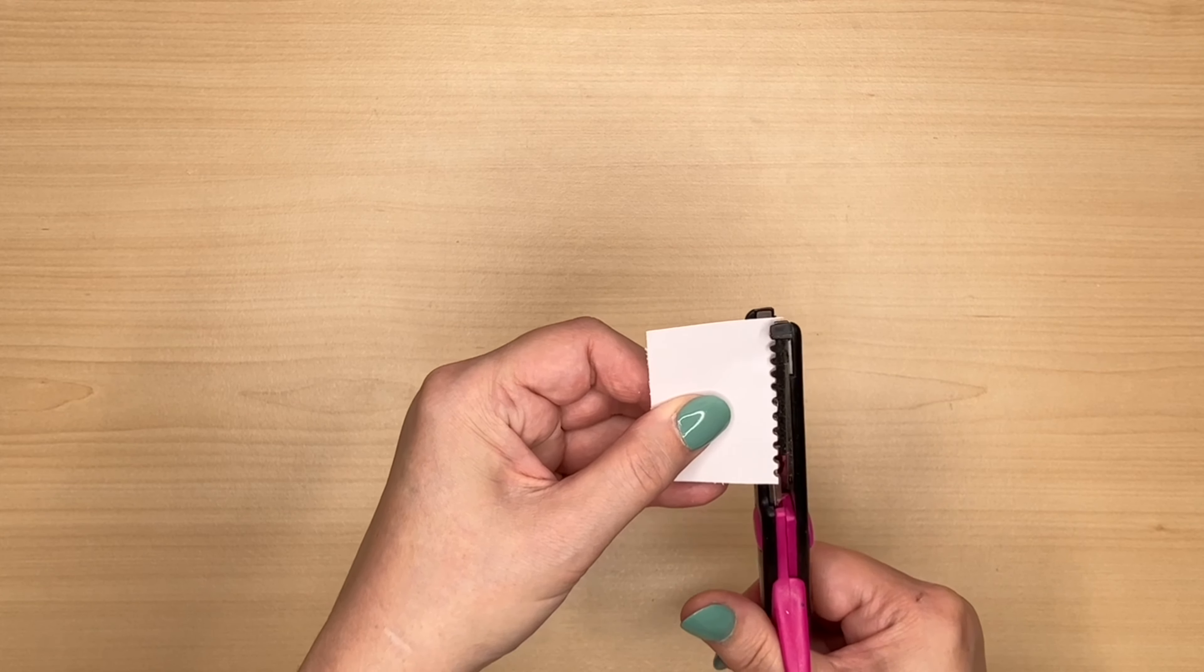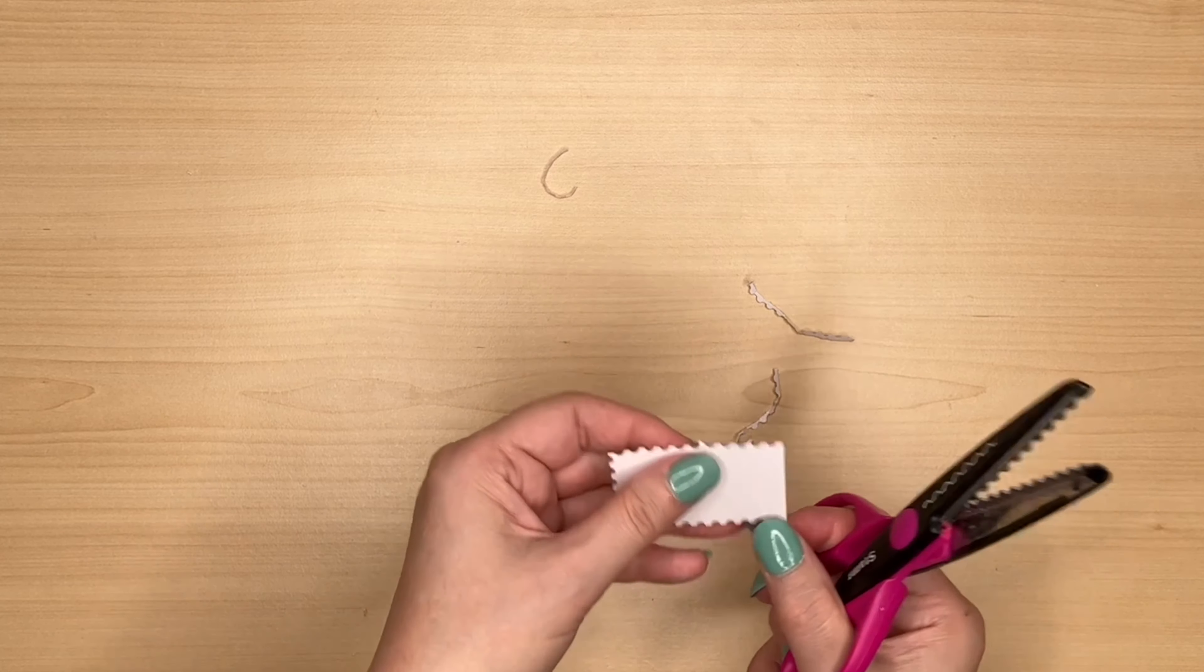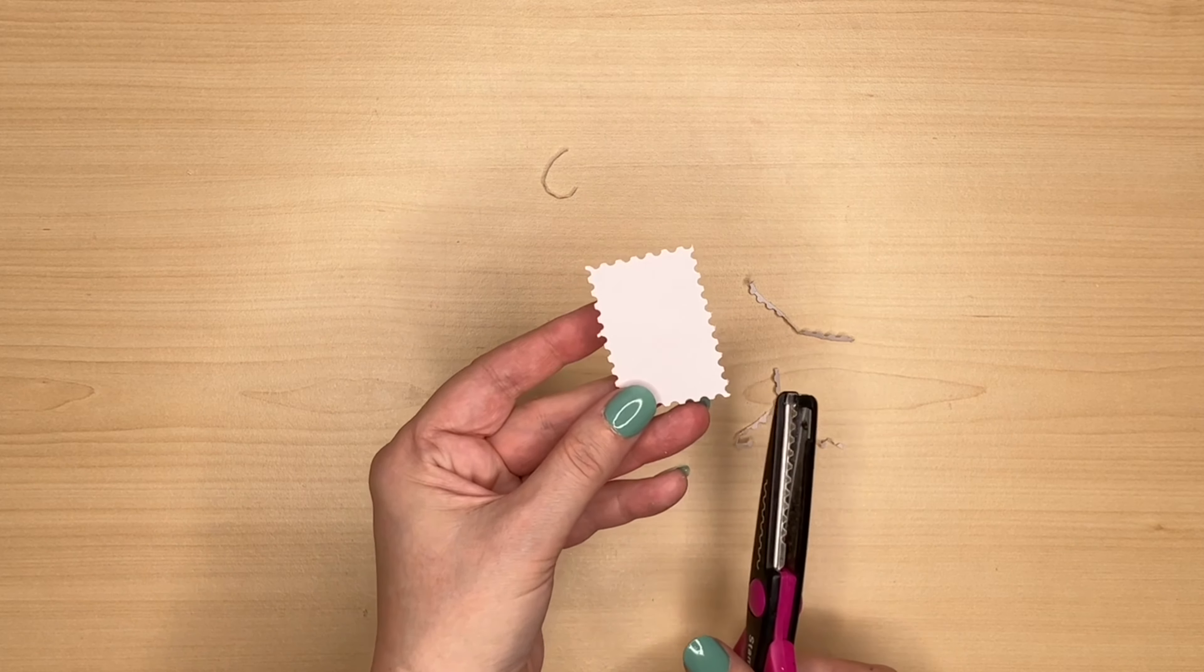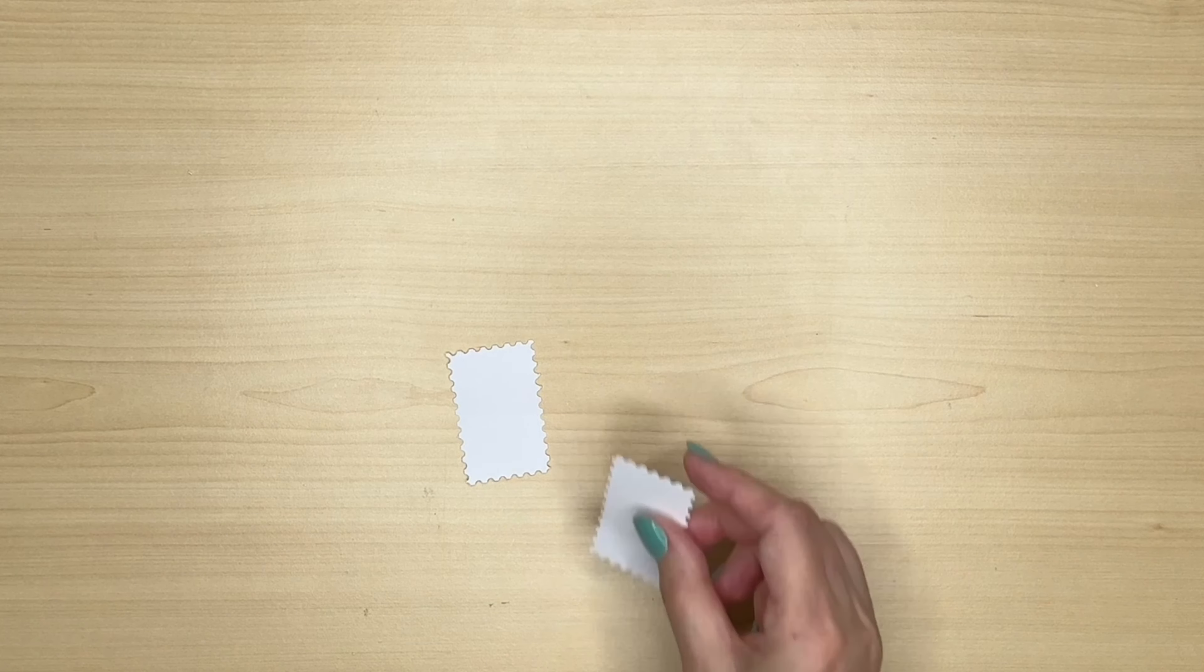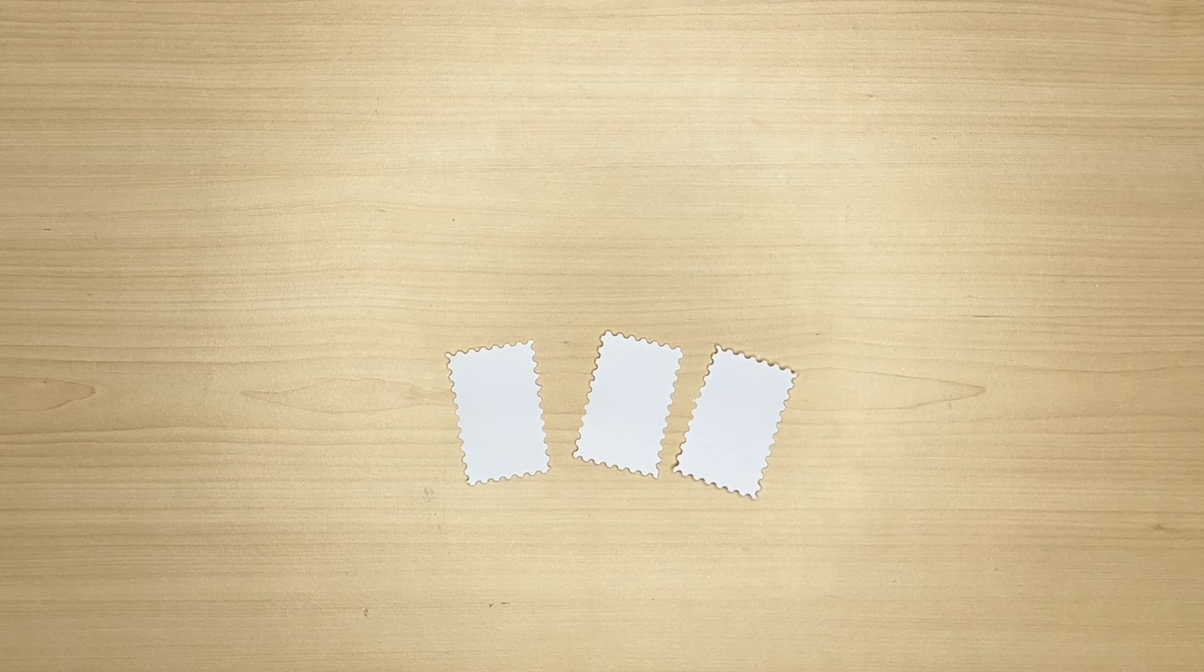Now let's get started and the first thing I'm going to do is make the stamps. I have these plastic scissors with the decorative edge. You can still get hold of them on places like Amazon and in kids craft sets and I'm just cutting around the edge of some white card.